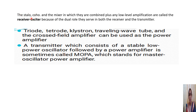The stable local oscillator, the coherent oscillator, the mixer in which they are combined, and any low-level amplification are collectively called the receiver exciter, which serves dual roles in both transmitter and receiver. Any amplifier working in the microwave range — triode, klystron, traveling wave tube, or crossed-field amplifier — can be used as the power amplifier. A transmitter consisting of a stable low-power oscillator followed by a power amplifier is called MOPA, which stands for Master Oscillator Power Amplifier.